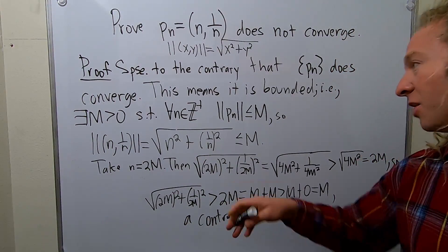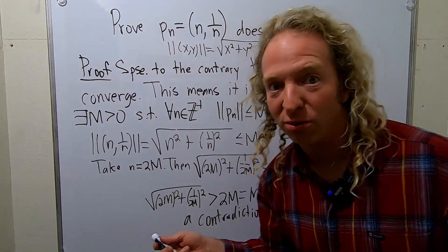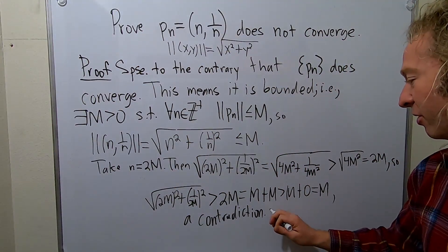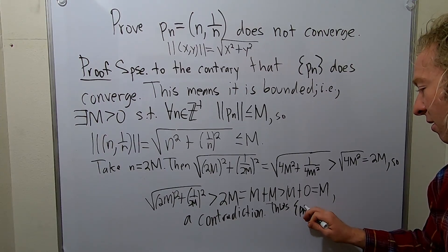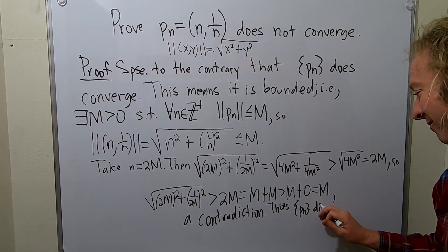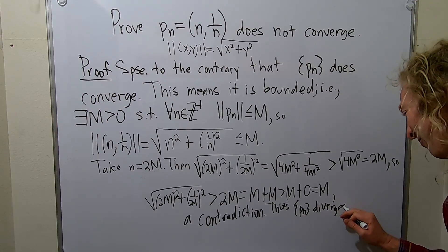So our assumption, our supposition cannot be true, right? It does not converge. So thus, p n diverges, right? It cannot converge.